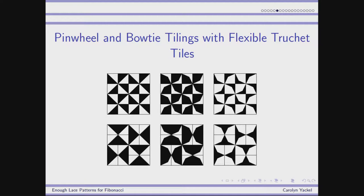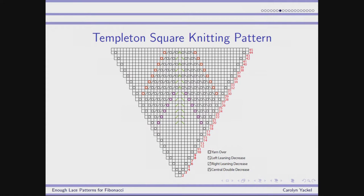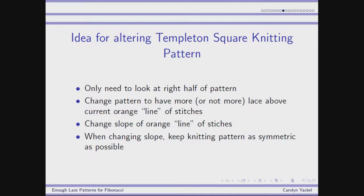I wanted to do the same thing, but I was having some laciness going on, so I wanted to make my squares either more lacy or less lacy. Here is the Templeton square knitting pattern — you really only need to look at the right half, since the pattern is repeated four times around to give you a square. Looking at the right half, the orange line of yarn overs is making lace, and pulling that changes the laciness of the upper part. That changes the slope, and I still want to keep the knitting pattern as symmetric as possible for aesthetic purposes.